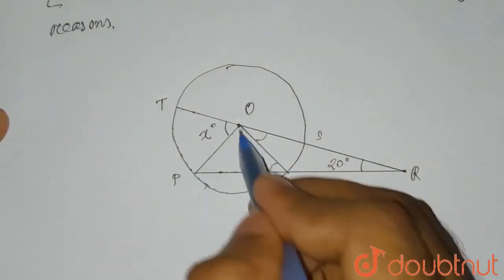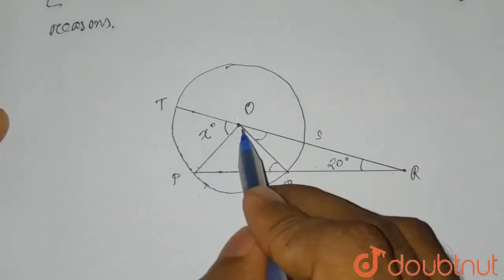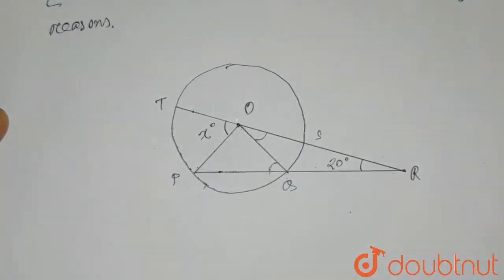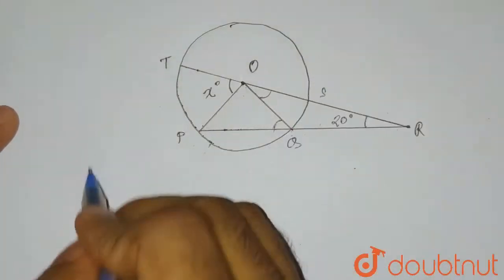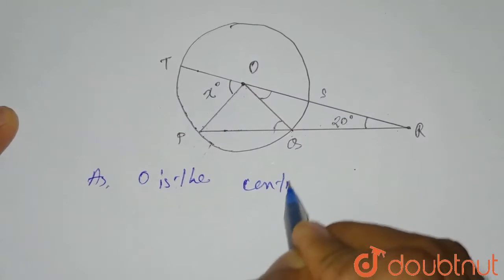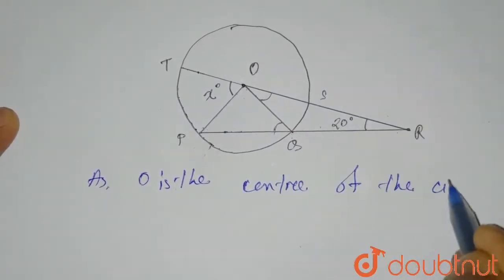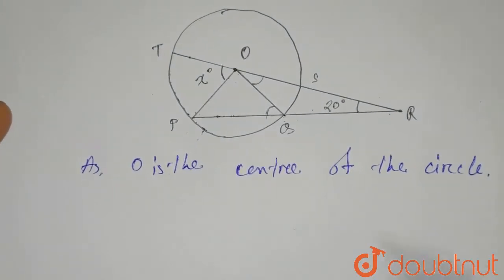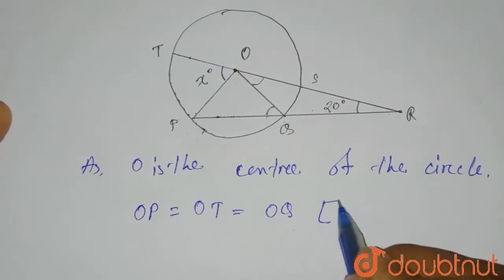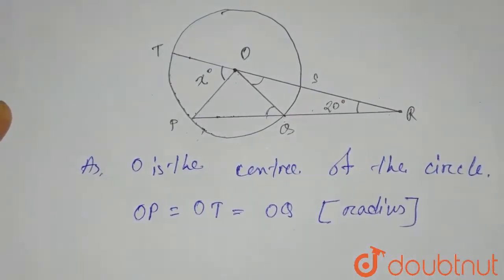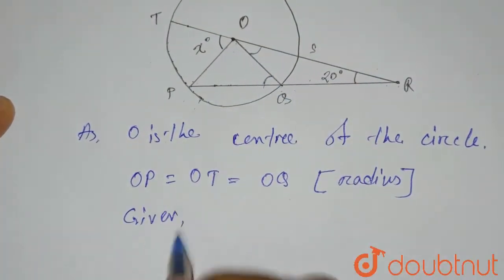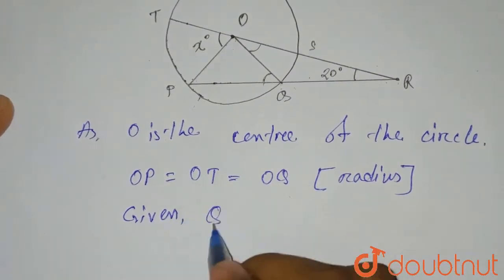This is the circle, which means OP equals OQ. As O is the center of the circle, we can write that OP equals OT equals OQ, because all of them are radii. It is also given in the question that QR equals OP.